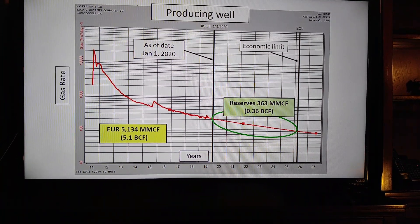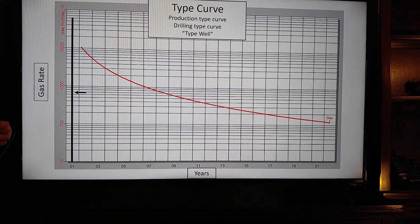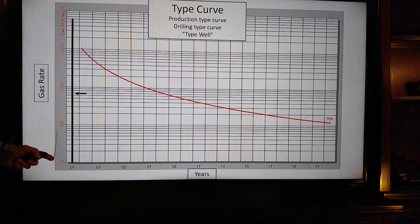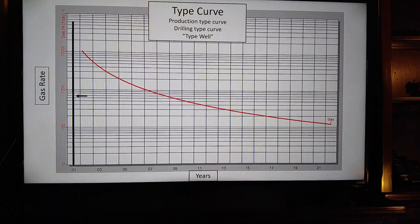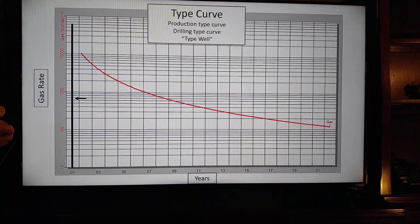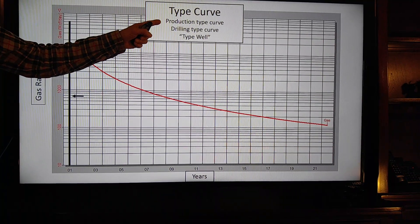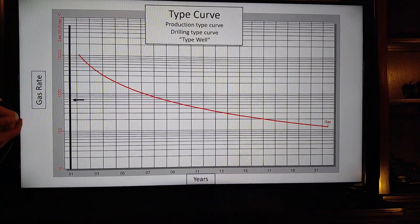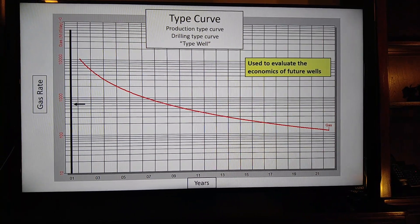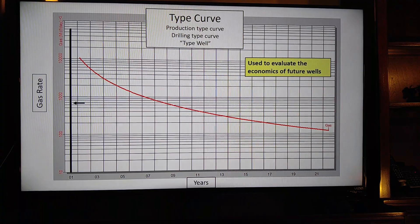Let's look at a drilling well example. This is a type curve showing the gas rate on the y-axis and time in years on the x-axis. This is an expected rate profile for wells we're going to drill in the future. Some people call them production type curves, drilling type curves, or the new terminology is type well. These type curves are used to evaluate the economics of future wells.